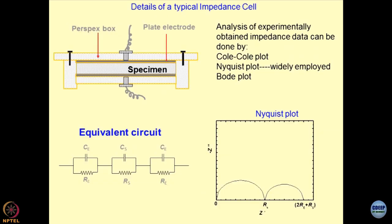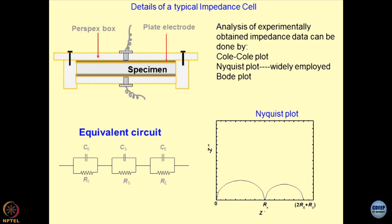This setup is used for obtaining the impedance of the samples — this is what is known as an impedance analyzer. The sample itself can be modeled as a combination of RC. Considering the specimen and the two electrodes, we can develop an equivalent circuit: the central portion of the specimen is represented as a combination of capacitance and resistance, and the two plate electrodes are represented again as an RC circuit. When plotted on a Nyquist plot, the real part Z' is plotted against the imaginary part.